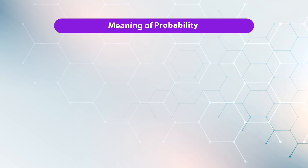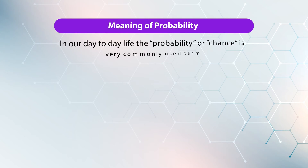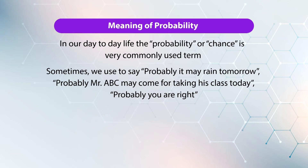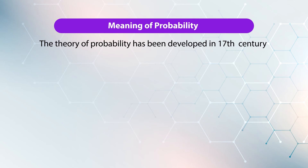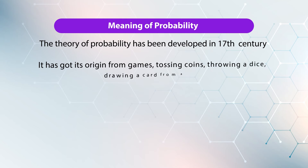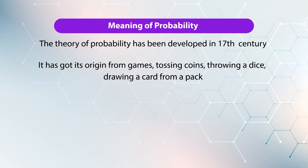In our day-to-day life, probability or chance is a very commonly used term. Sometimes we say 'probably it may rain tomorrow' or 'probably Mr. ABC may come for taking his class today.' All these terms — possibility and probability — convey the same meaning, but in statistics probability has certain special connotations. The theory of probability was developed in the 17th century and got its origin from games such as tossing coins, throwing a dice, and drawing a card from a pack. In 1954, Anthony Gournand took an initiation and interest in this area.